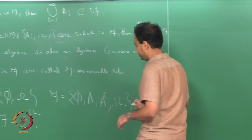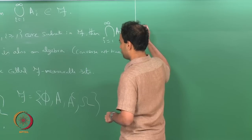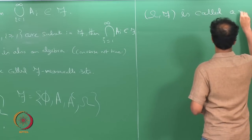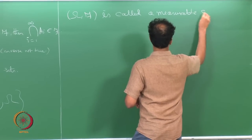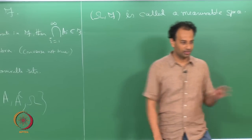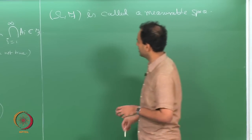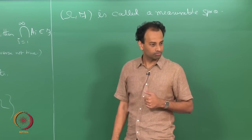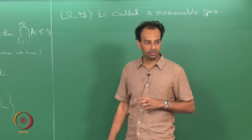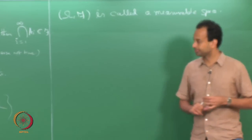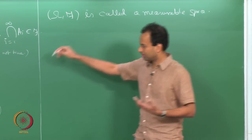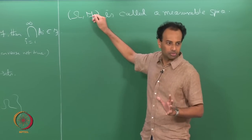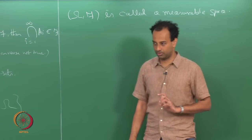Another definition: the pair (omega, F) is called a measurable space. A measurable space is some set omega endowed with a sigma algebra of subsets. This F can be any sigma algebra — it does not have to be any particular one — as long as you endow omega with some sigma algebra F, the pair (omega, F) is called a measurable space.